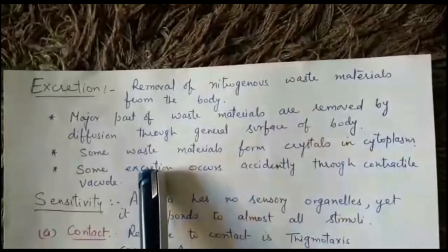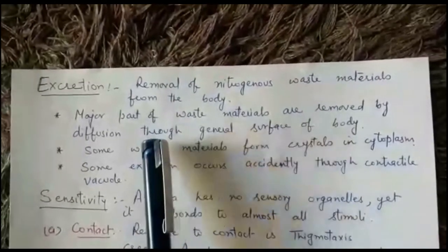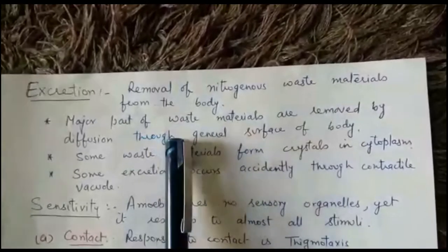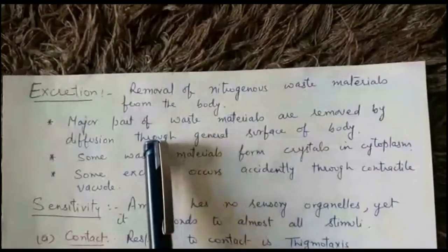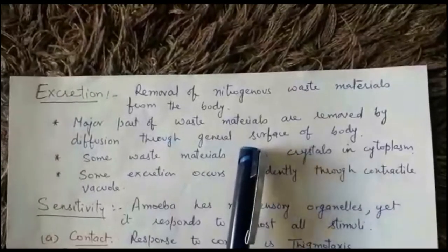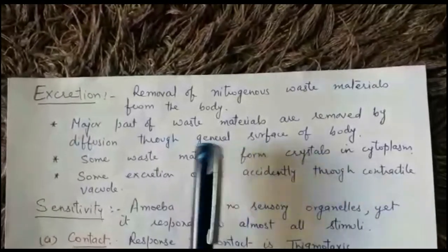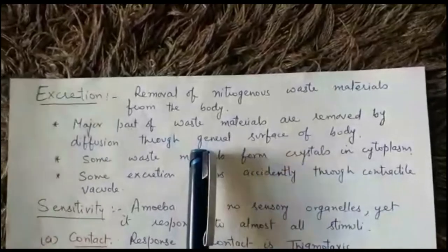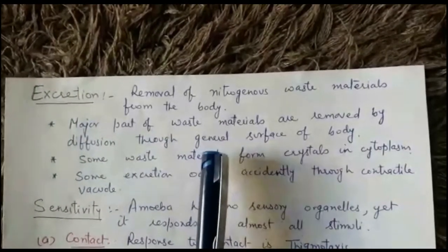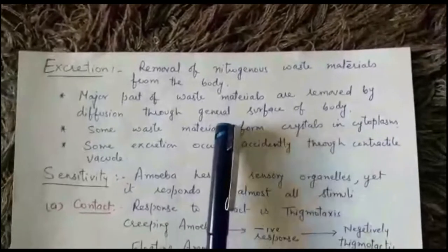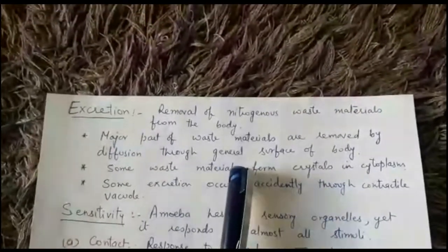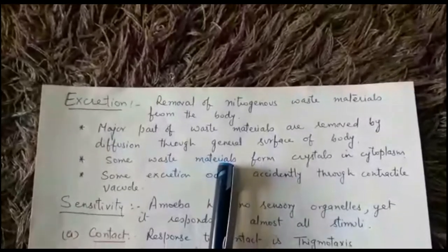How are waste materials removed from the body? The majority of waste materials — mainly nitrogenous waste — is ammonia. That ammonia mainly diffuses out through the general surface of the animal due to difference in concentration. In amoeba, ammonia is more concentrated inside, so it naturally diffuses out through the plasma membrane by diffusion through the general surface.